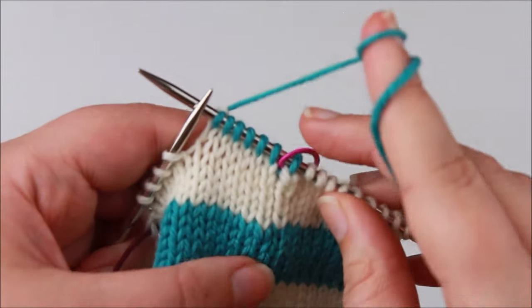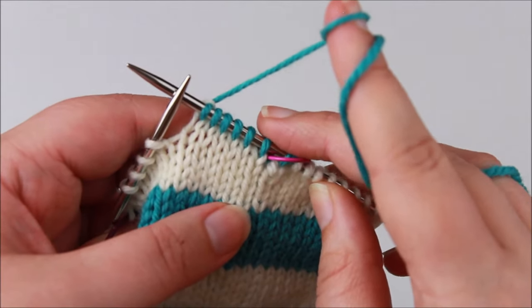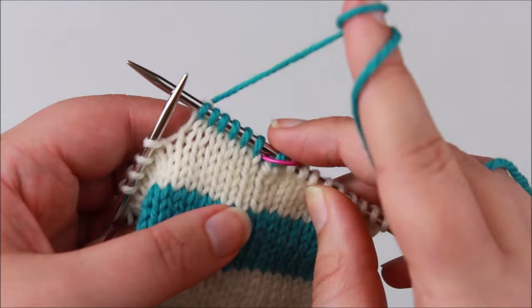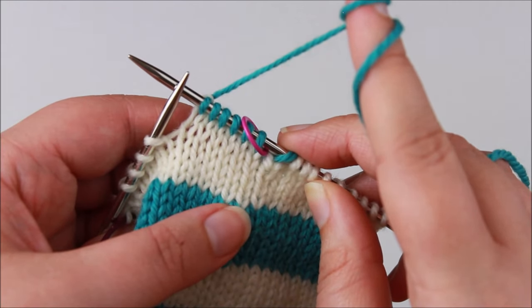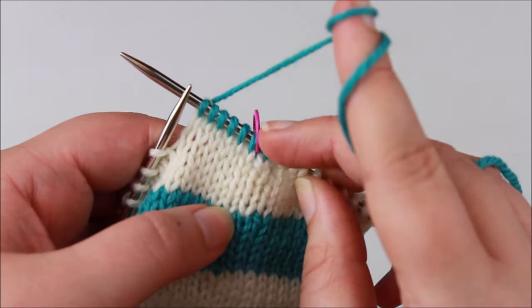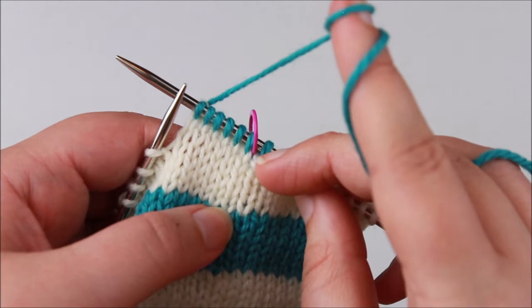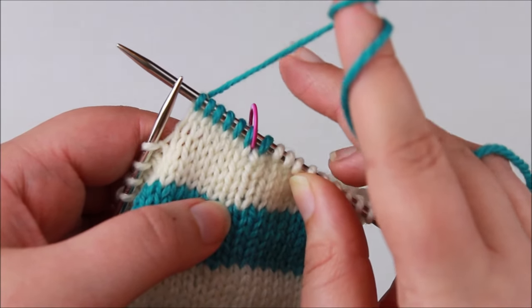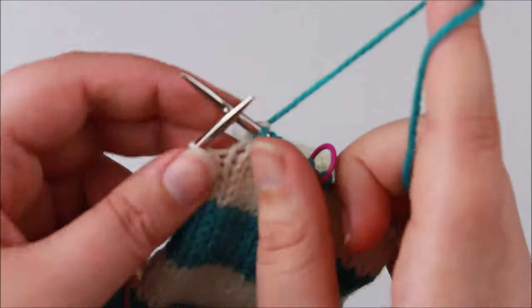So just once again, usually your pattern would say to change the colour here. We've just done it one stitch prior to where the pattern has asked us to and that stitch was worked twice. So it was worked with the cream to finish off the previous round and then also worked once again with the new colour.